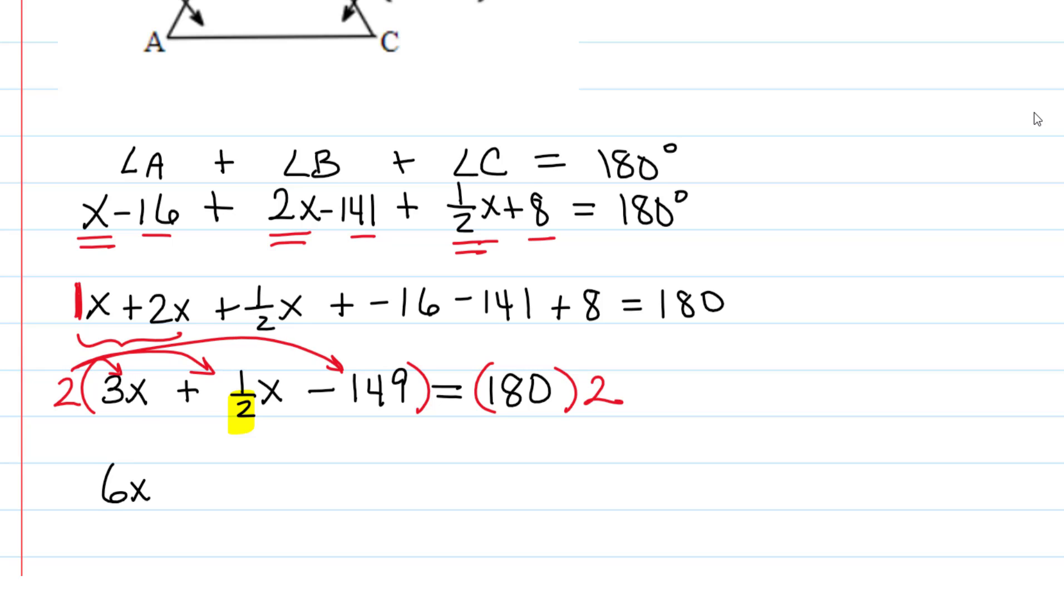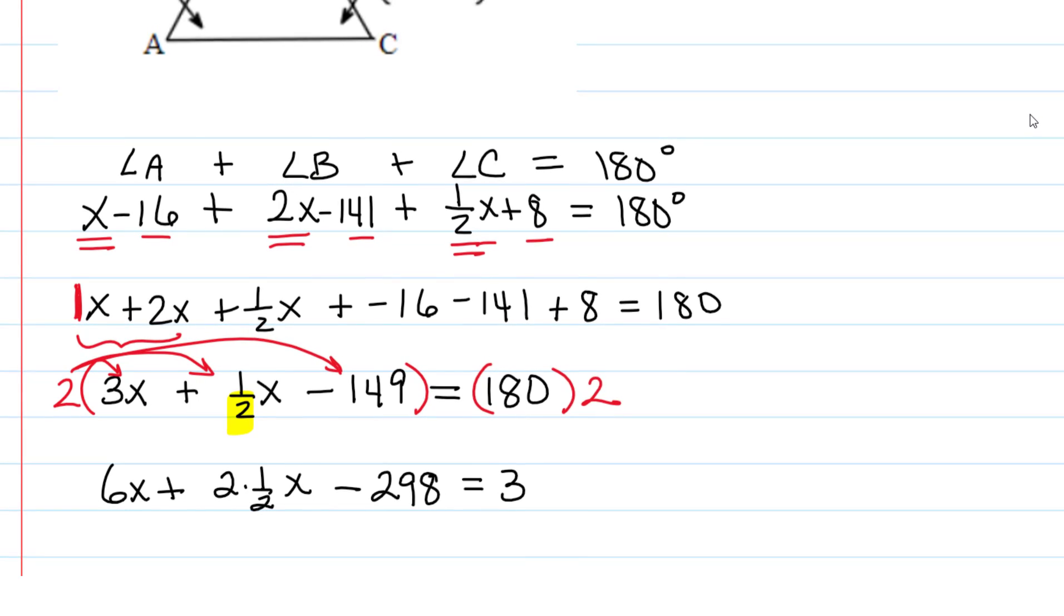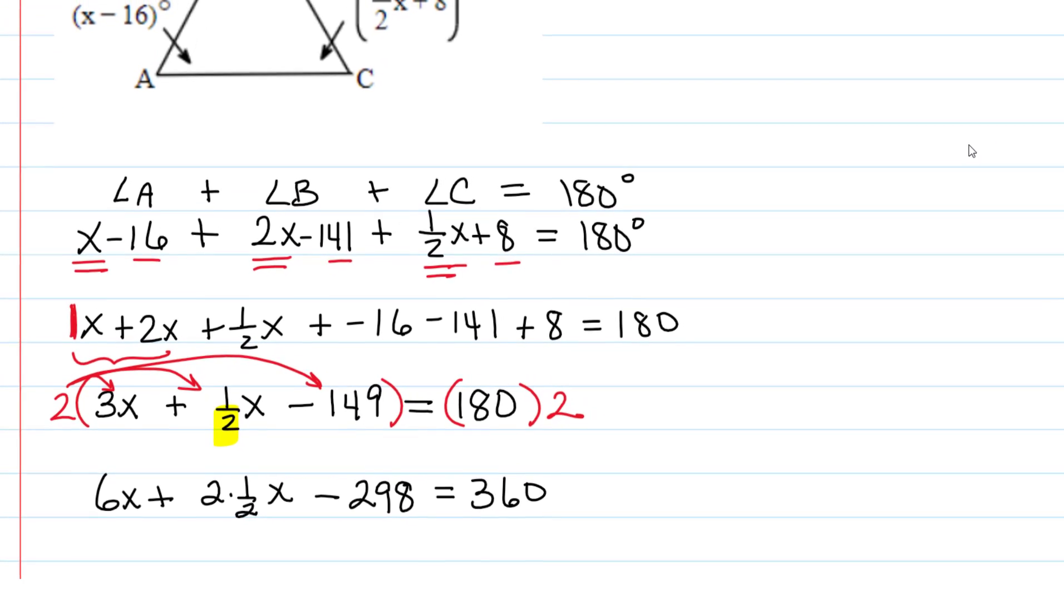Then we would get 6x plus, now I'm just going to write 2 times a half for a minute, x, and come back to that, minus 2 times 149 is going to be 298. And then on the right we have 180 times 2, which is 360.